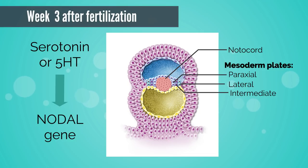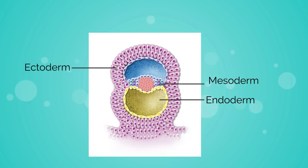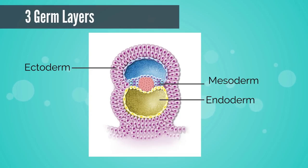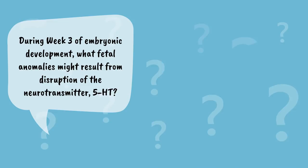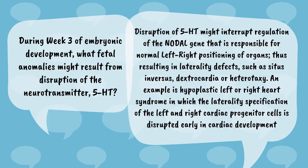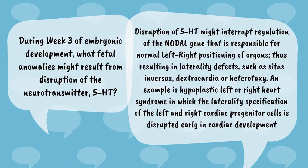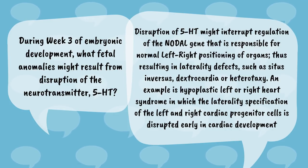Especially important is the neurotransmitter serotonin, or 5-HT, which regulates the nodal gene for normal left-right organ positioning. Tissue and organ differentiation begin in the cephalocaudal, or head-to-tail, direction. Let's pause, think, and apply: during week three of embryonic development, what fetal anomalies might result from disruption of the neurotransmitter 5-HT? Disruption of 5-HT might interrupt regulation of the nodal gene responsible for normal left-right positioning of organs, resulting in laterality defects such as situs inversus, dextrocardia, or heterotaxy. An example is hypoplastic left or right heart syndrome, in which laterality specification of the left and right cardiac progenitor cells is disrupted early in cardiac development.